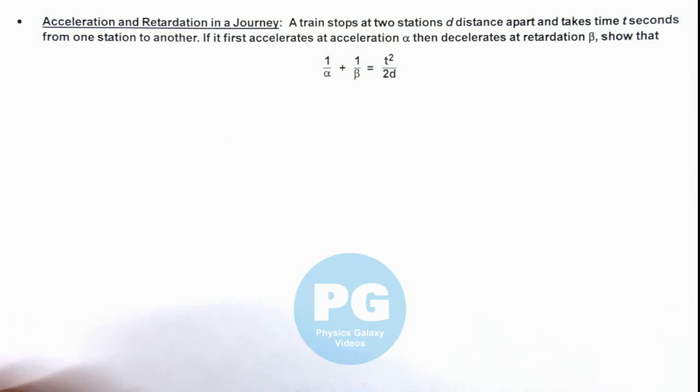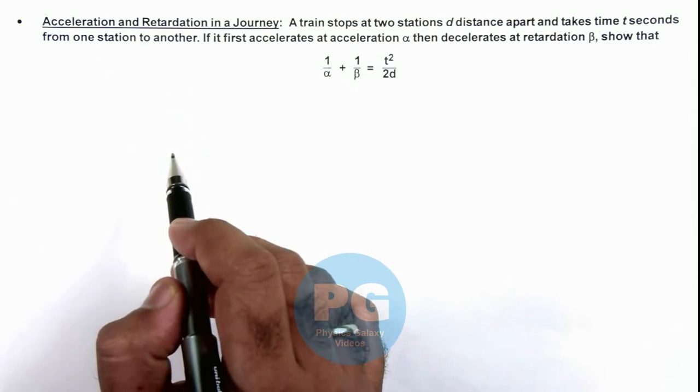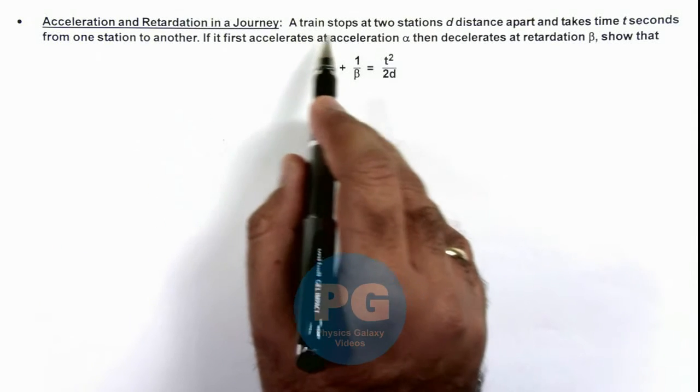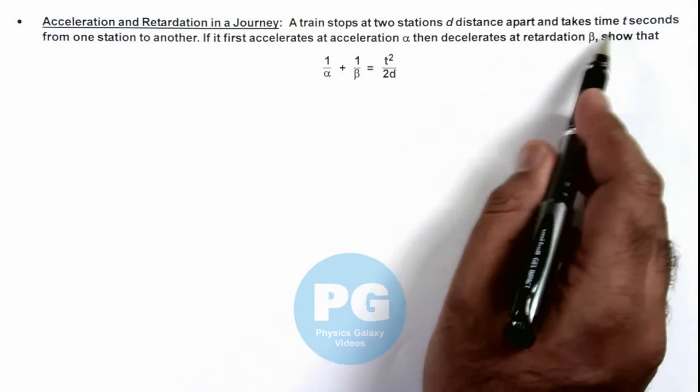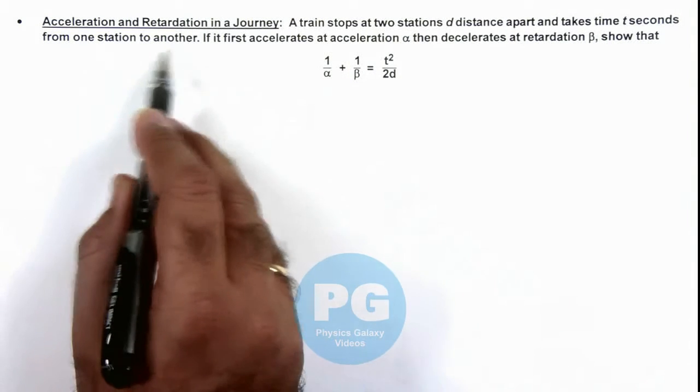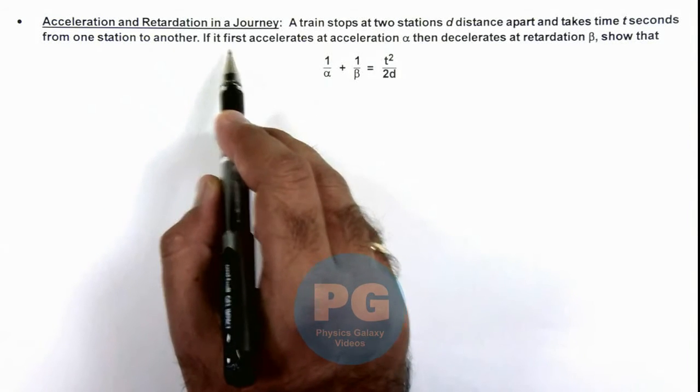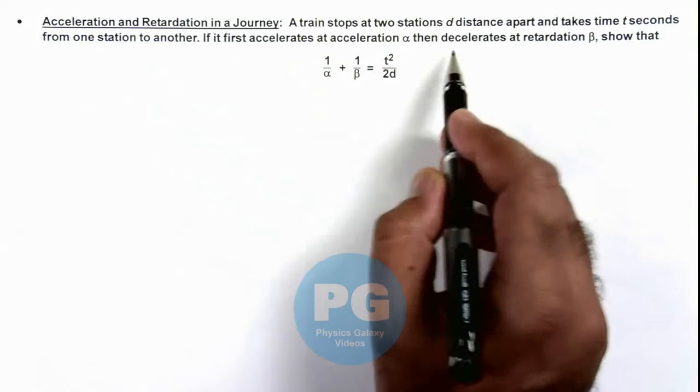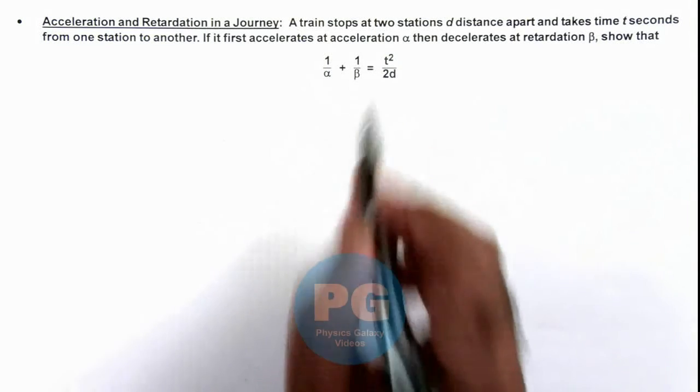Let us discuss the case of acceleration and retardation in a journey. We are given that a train stops at two stations, d distance apart, and takes time t seconds from one station to another. If it first accelerates at acceleration α, then decelerates at retardation β, we need to show this relation.